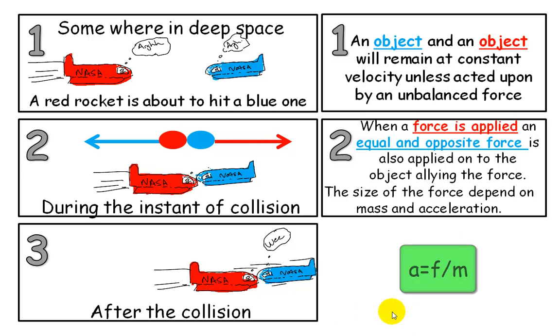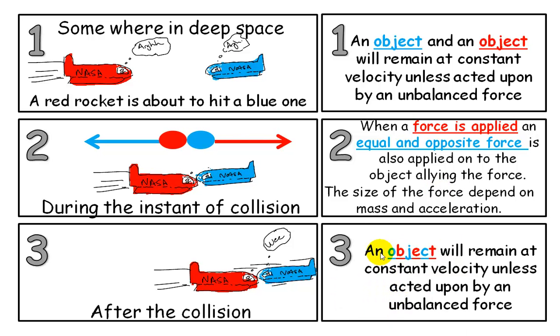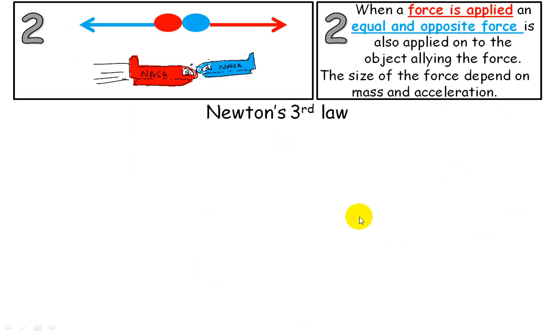After the collision, we're back to Law 1. The object, this time it's the combined object, will remain at constant velocity unless acted upon by an unbalanced force.